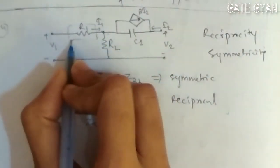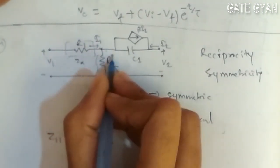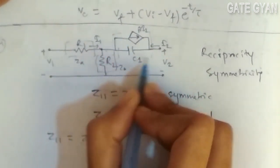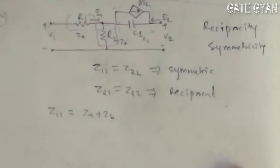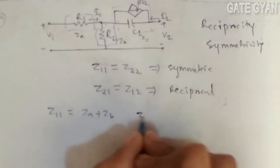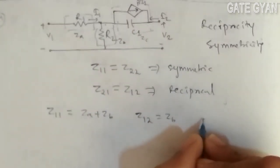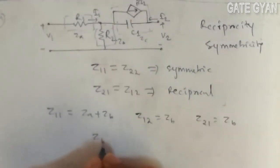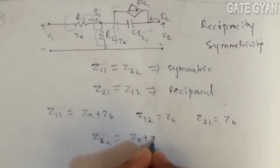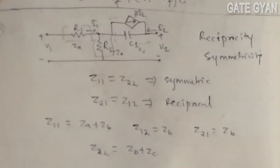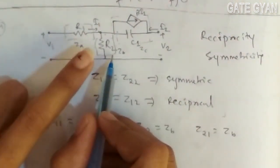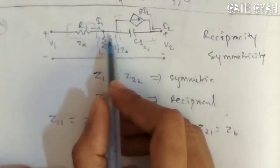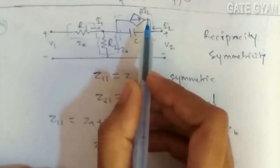Here's za, this one is zb, and this is zc. So z11 is given by za plus zb. z12 is zb, z21 is also zb, and z22 is given by zb plus zc. By observing the circuit, za plus zb equals 2R, and z22 equals zb plus zc, which includes the dependent source.